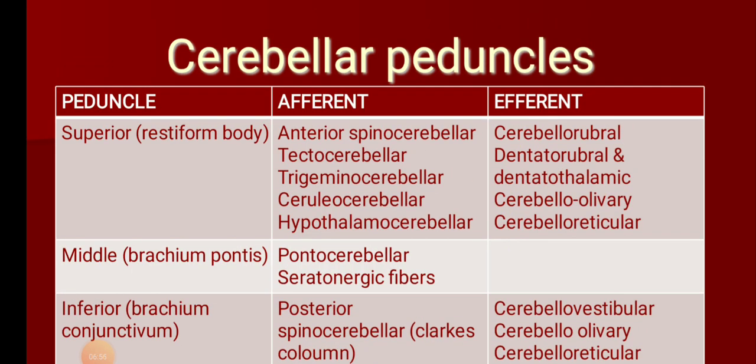The superior cerebellar peduncle connects the midbrain to the cerebellum. It carries both afferent and efferent fibers. Remember that the posterior spinocerebellar was an afferent fiber through the inferior cerebellar peduncle. The anterior spinocerebellar tract passes through the superior cerebellar peduncle — that is the first afferent fiber. Close to that is the tectum, a part of the midbrain, from which fibers go to the cerebellum — termed tectocerebellar.